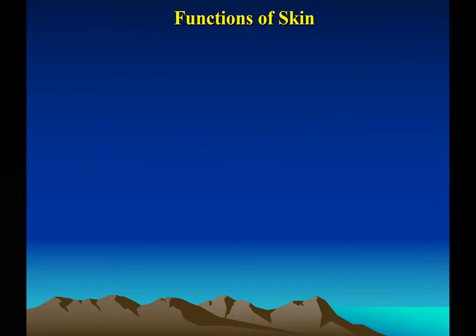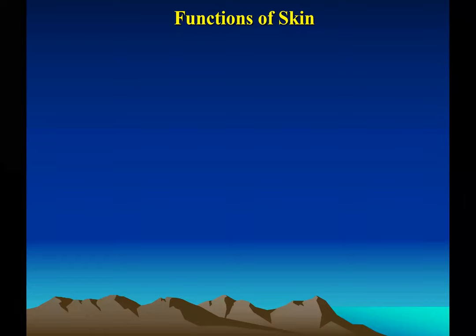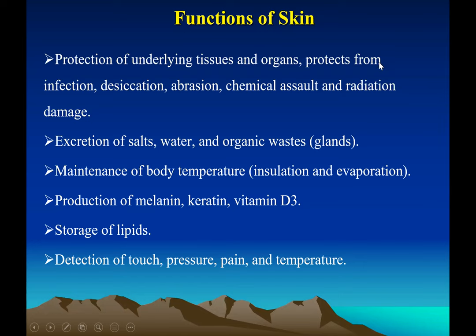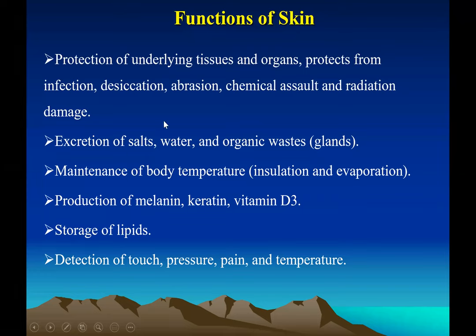Skin is the barrier between the human body and the external environment. The first main function is protection, and then maintaining homeostasis for thermoregulation. It protects all the underlying tissues and organs, protects us from infection, serving as the first line of defense against bacteria, viruses, and harmful environmental hazards. It also protects us from desiccation, abrasion, chemical assault, and radiation. Our skin is also an excretory organ — it gets rid of toxic salts, water, and organic waste through the glands in the skin.